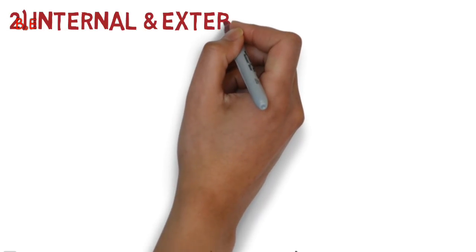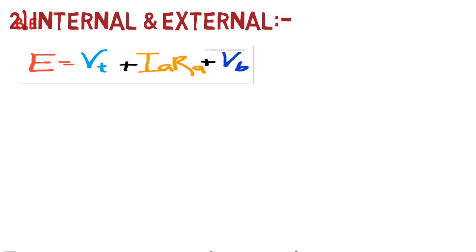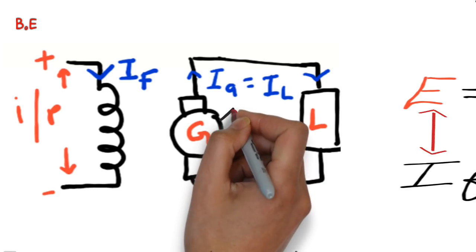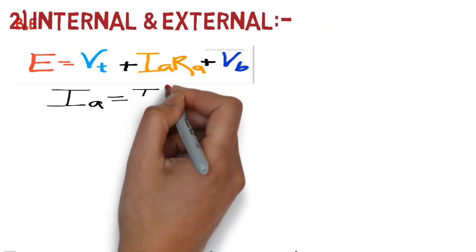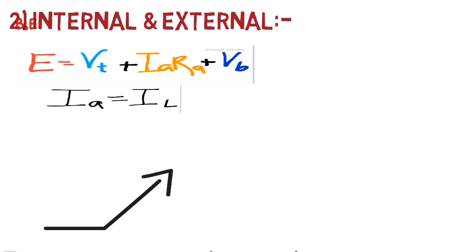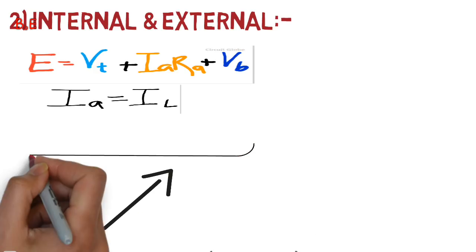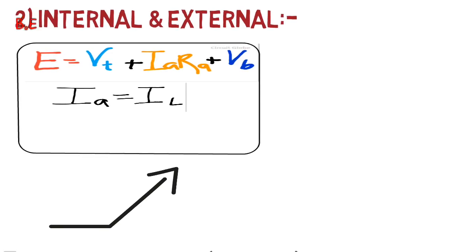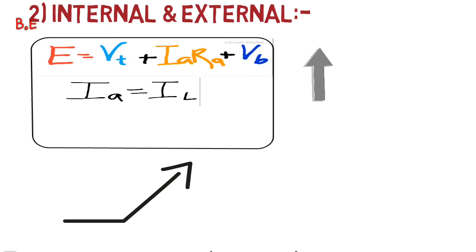Now let's see the internal and external characteristics of the separately excited DC generator. In this, the generator is operated on load condition to check its performance. The equation is E = VT + IA·RA + VB, where VT is terminal voltage, IA·RA is armature current times armature resistance, and armature current equals load current. If we increase the load, load and armature current also increase, and armature reaction also increases.